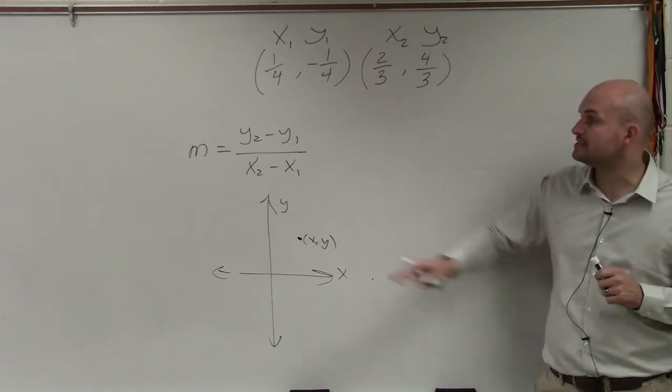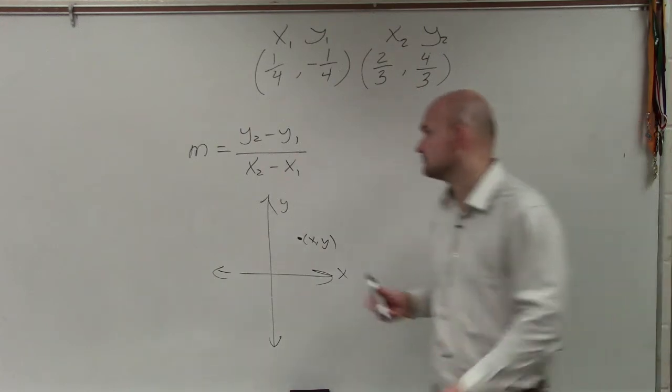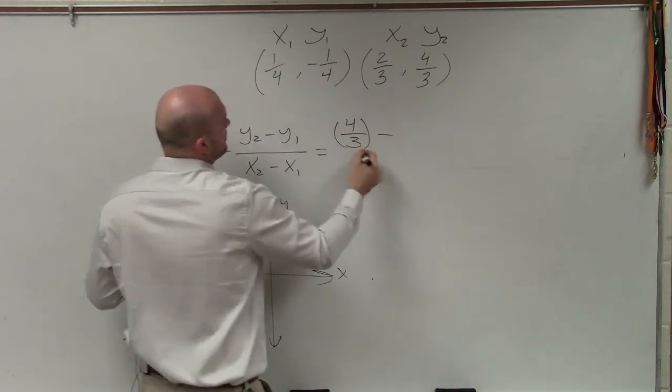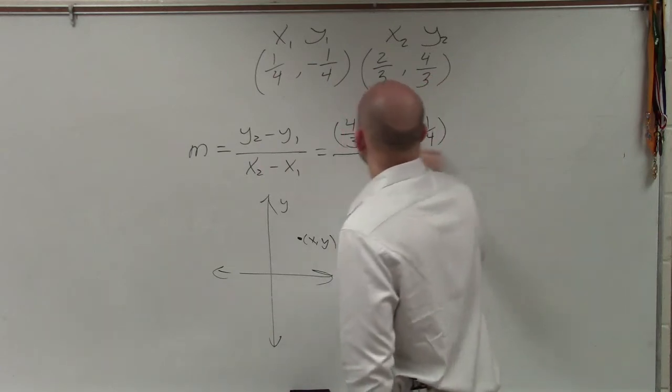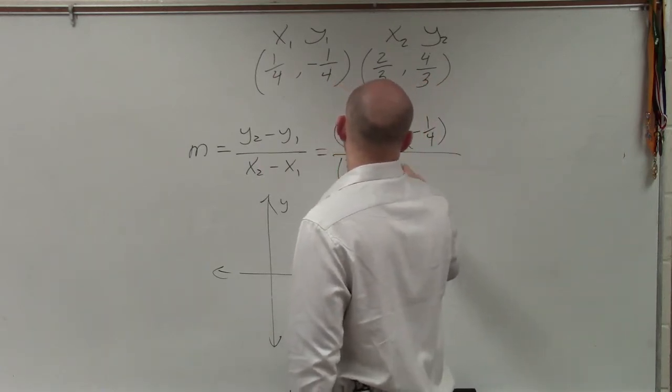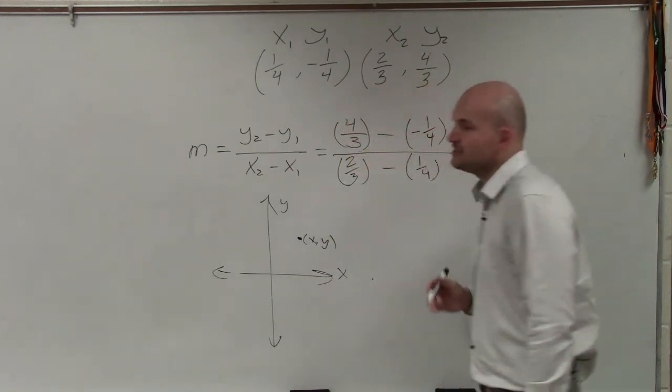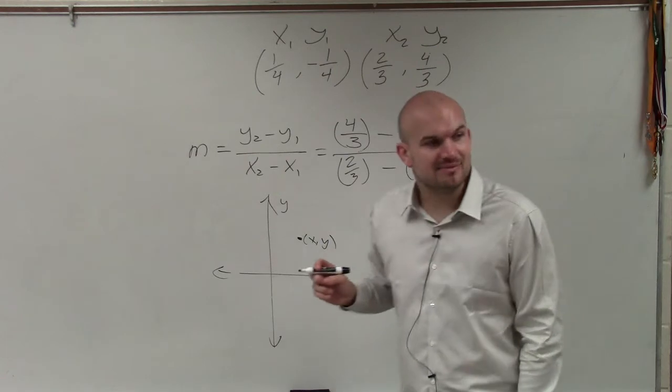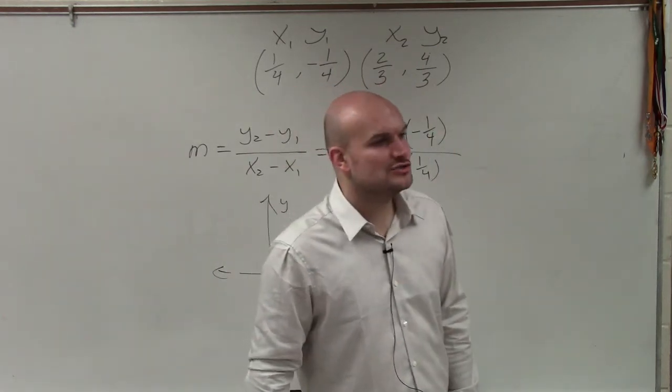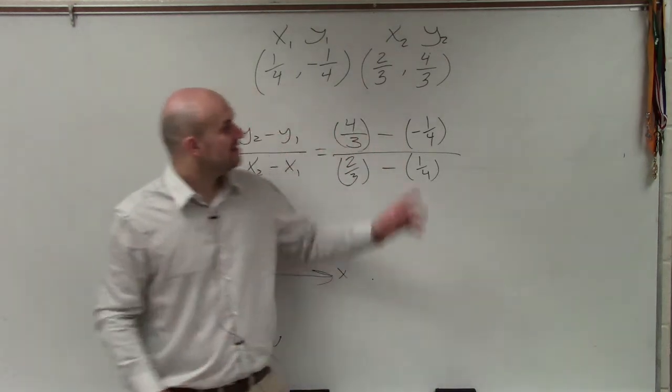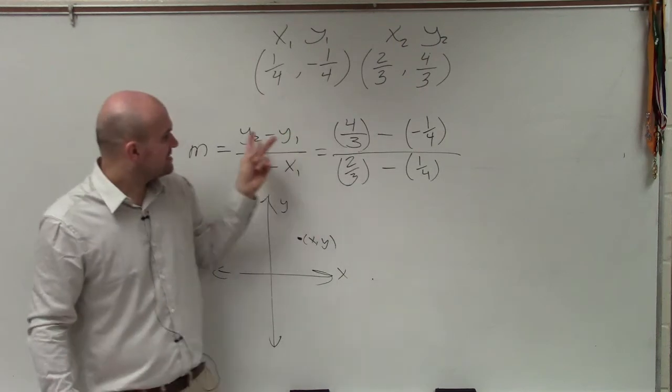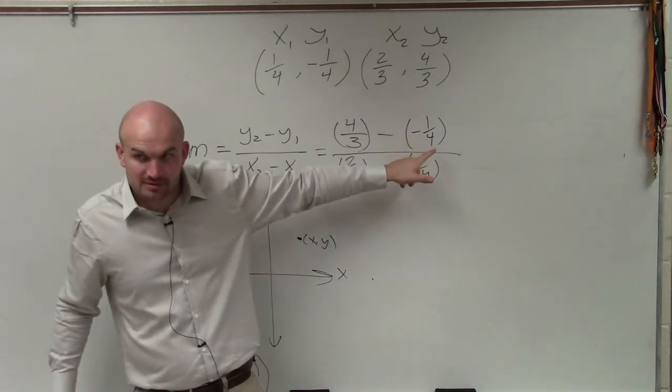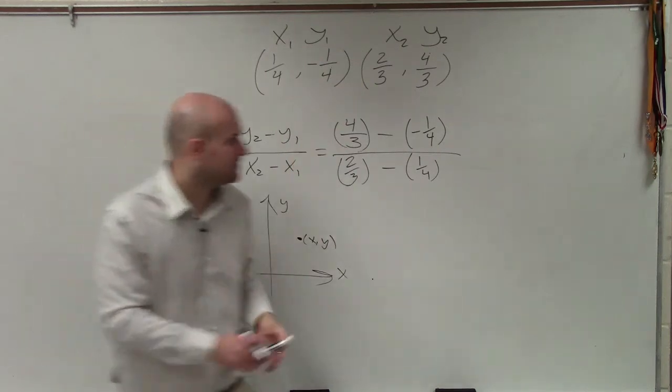So now to determine slope between two points, all we're simply going to do is plug in our points. And make sure when you guys plug in points that you use parentheses minus negative 1 4th, all over 2 3rds minus 1 4th. And the reason why using parentheses is so important is because the most common mistake that students will make is that they say 4 3rds minus 1 4th. No, it's y2 minus y1. y2 minus y1. Does everybody see that? It's a very, very common mistake.